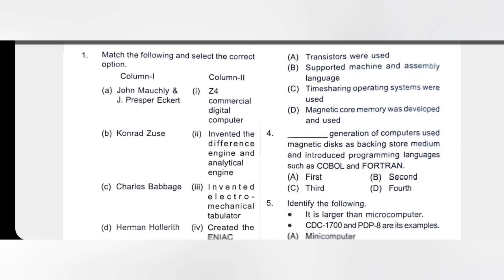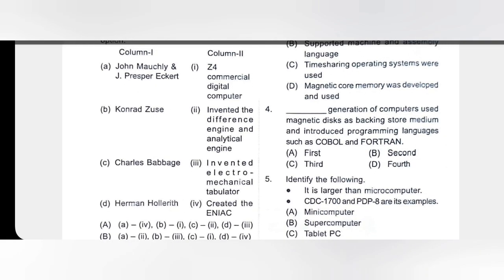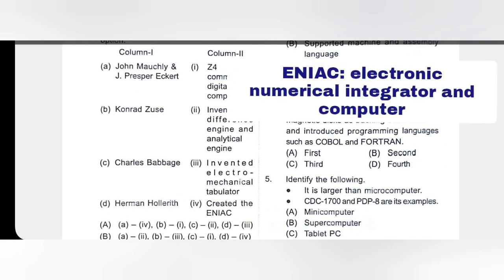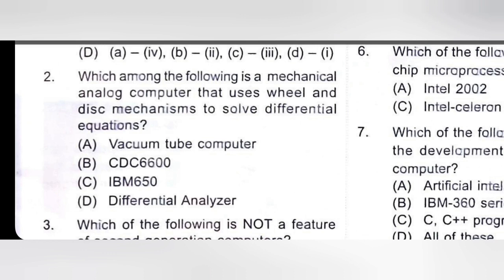You should remember things. First question: match the following and select the correct option. Column 1 is John Mauchly and J. Presper Eckert, created ENIAC; Conrad Zuse, Z4 commercial digital computer; Charles Babbage invented the difference engine and analytical engine; Herman Hollerith invented the electromechanical tabulator. Option A is correct for this question.